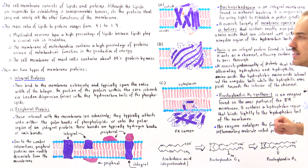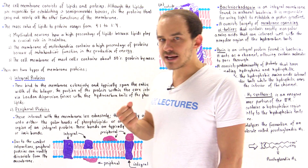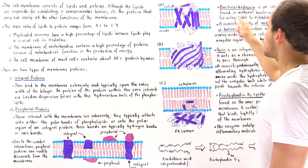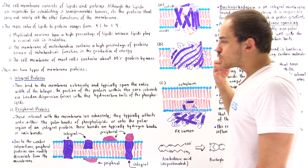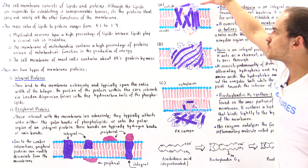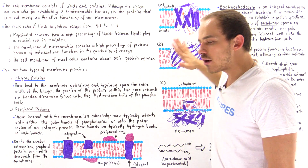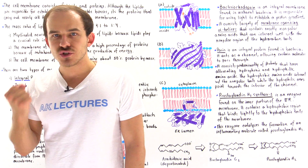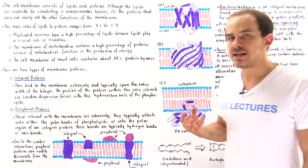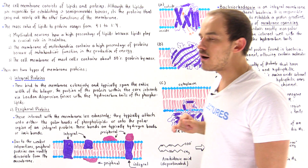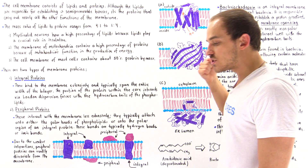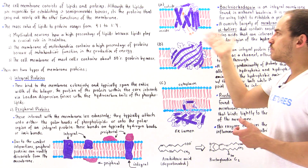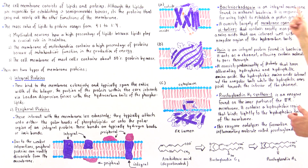Let's discuss three specific examples of integral proteins studied extensively: bacteriorhodopsin, porin, and prostaglandin H2 synthase 1. Bacteriorhodopsin is a transmembrane integral protein — it spans the entire membrane — and is found in special types of archaeobacterial cells. The function of this protein is to use the energy stored in light to create a proton gradient, moving protons from the inside to the outside of the cell. By creating this proton gradient, it is able to synthesize high energy ATP molecules.